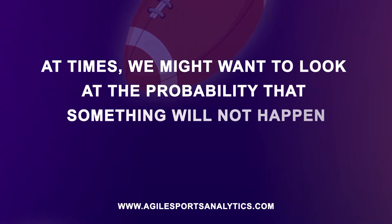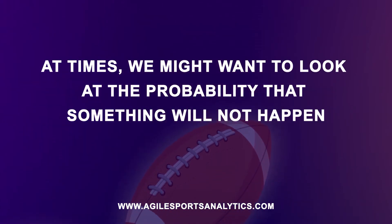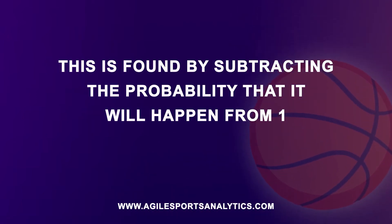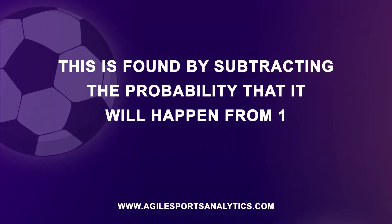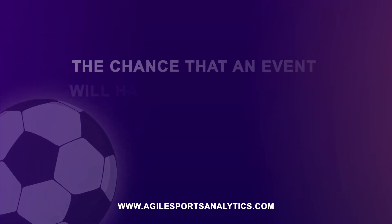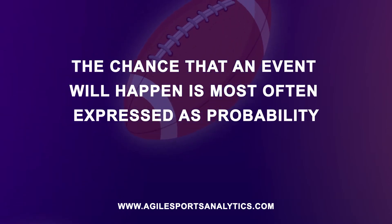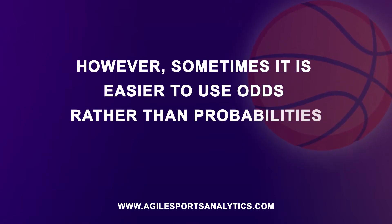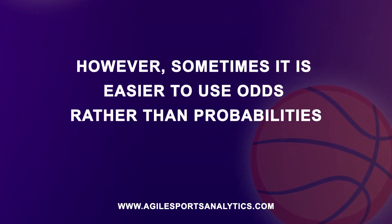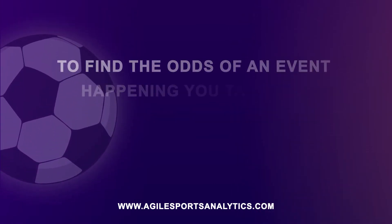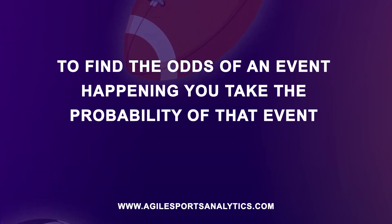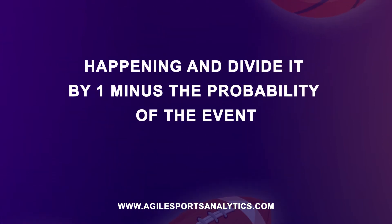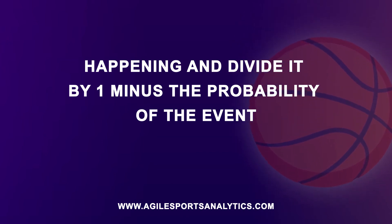At times, we might want to look at the probability that something will not happen. This is found by subtracting the probability that it will happen from one. The chance that an event will happen is most often expressed as probability. However, sometimes it's easier to use the odds rather than the probabilities. To find the odds of an event happening, you take the probability of that event happening and divide it by 1 minus the probability of the event.